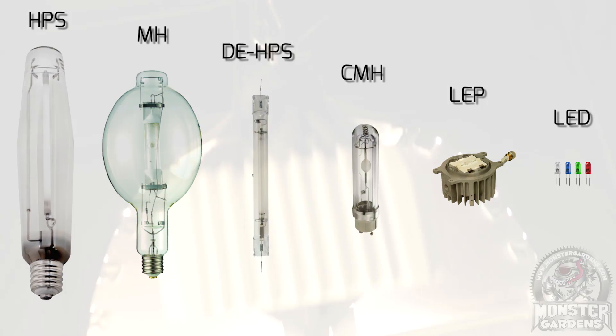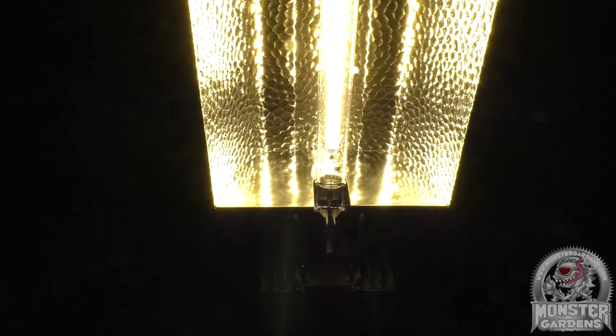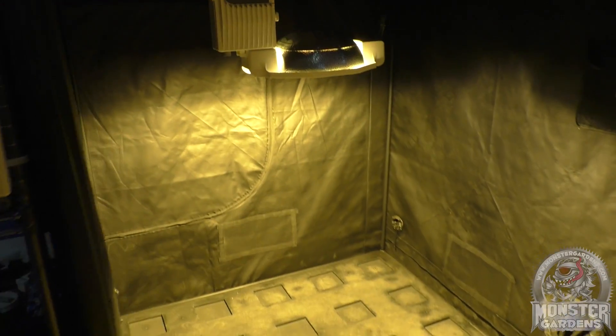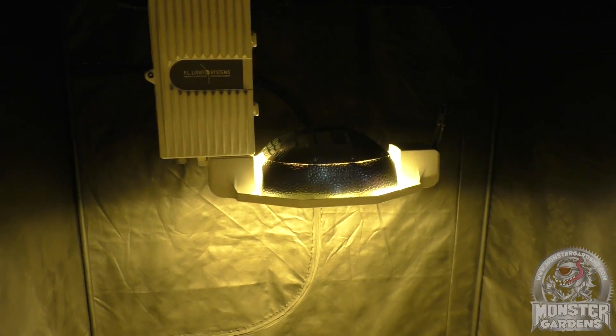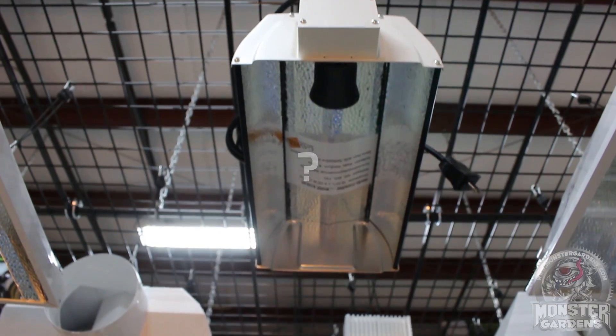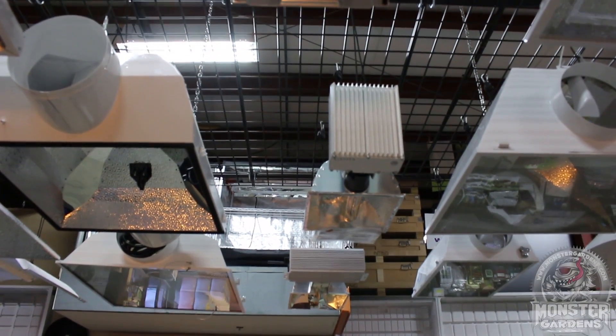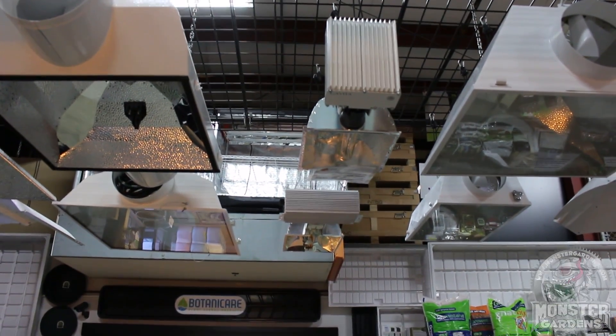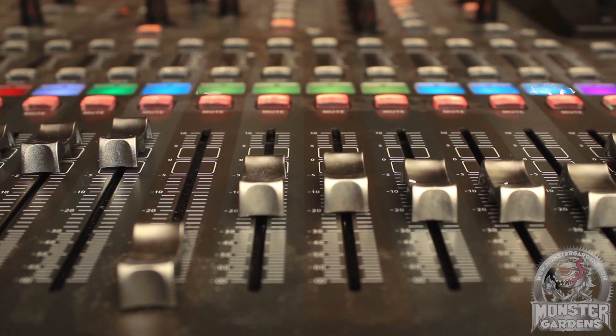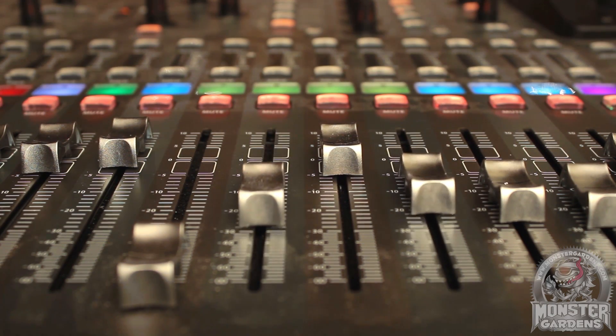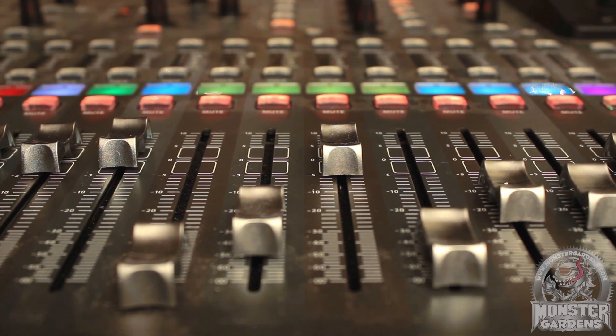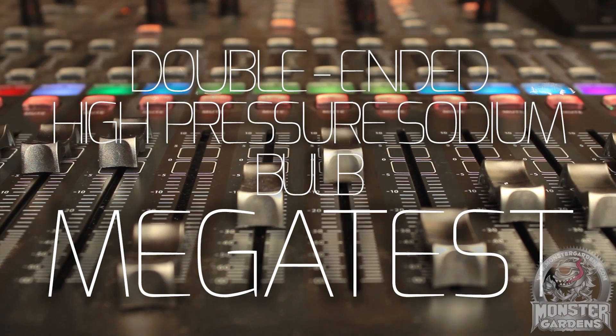Last time out, we looked at one-piece greenhouse-style fixtures, but what about the other side of the DEHPS coin, the ballast and hood separates? Well, while it's unrealistic for us to test every viable combination in one go, we can test components if we have some controls to gauge changes against, and that's what we're doing today with this DEHPS bulb test.